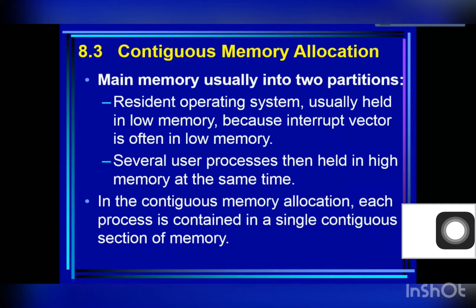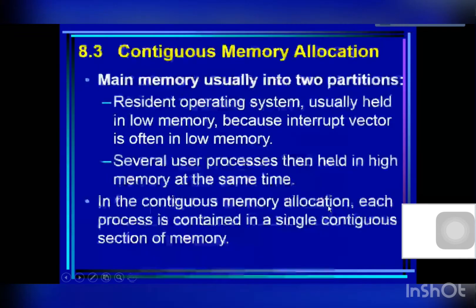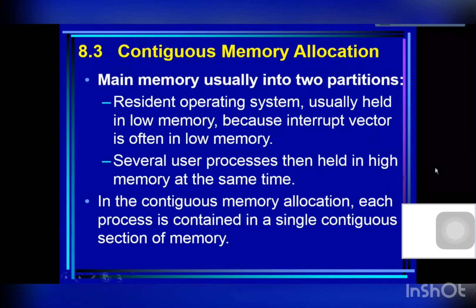Main memory is usually broken into two partitions: one for the resident operating system, and one for user processes. The resident operating system is usually held in low memory because the interrupt vector is often located in low memory.